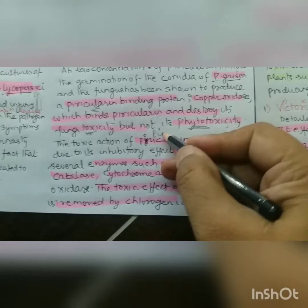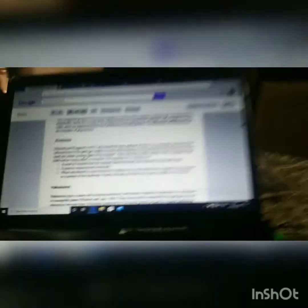The toxic action of pericularin appears to be due to its inhibitory effect on the activity of several enzymes: at high concentration, peroxidase, catalase, cytochrome oxidase, and ascorbic acid oxidase are inhibited. The toxic effect of pericularin is removed by chlorogenic acid, as discussed during the biochemical aspects of defense mechanisms.